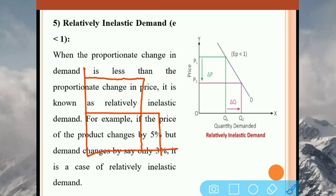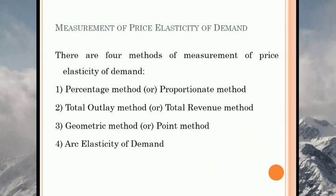So here we have discussed the five types of price elasticity of demand. Now, measurement of price elasticity of demand. There are mainly four methods: percentage method, proportionate method, total outlay method — also called total revenue method — geometric method, and arc elasticity of demand. But in the syllabus we only discuss one method, that is the percentage or proportionate method.